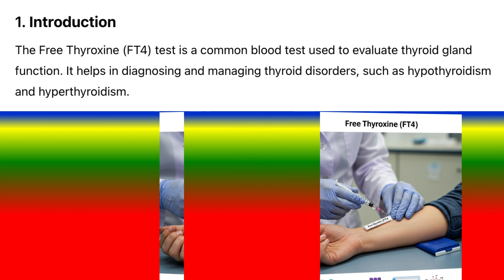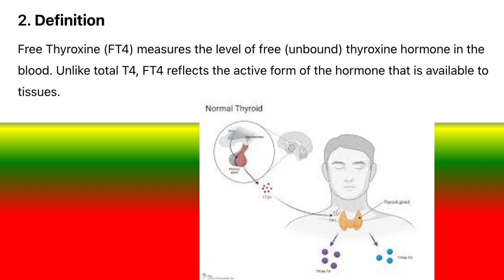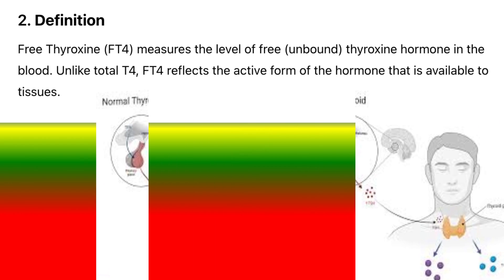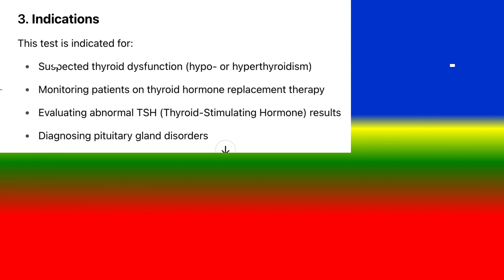FT4 measures the level of free, unbound thyroxine hormone in the blood. Unlike total T4, FT4 reflects the active form of the hormone that is available to tissues.